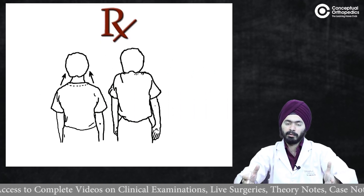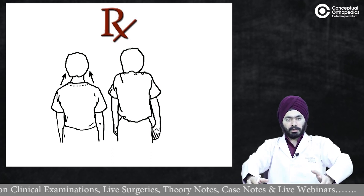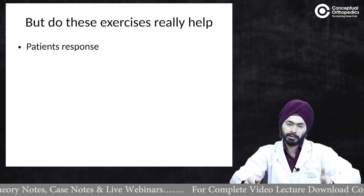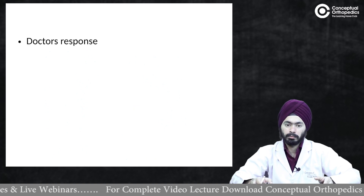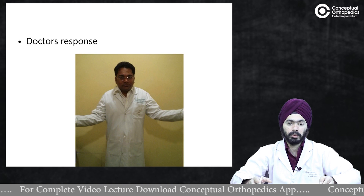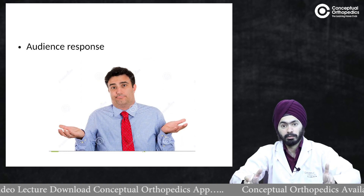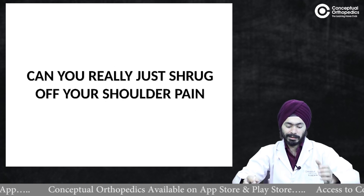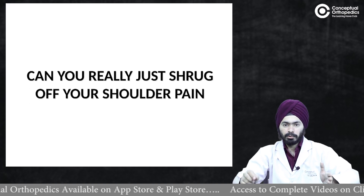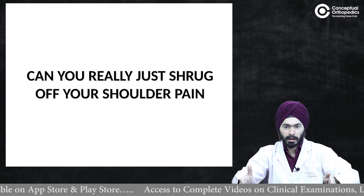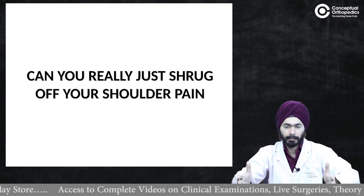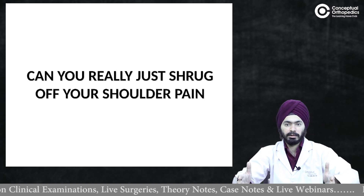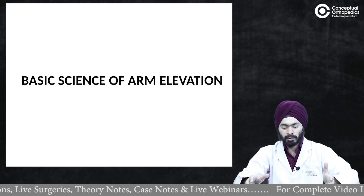The most common exercises we prescribe include shoulder movements, shrugging, and rotation. But do these exercises really help the patient? If you ask the patient, they say they don't know. If you ask the doctor who prescribes them, he says he doesn't know either. So which exercises really help? Coming back to the question with which I started this lecture: can you really just shrug off your shoulder pain, or is shrugging a scientifically valid exercise for patients with shoulder pain?